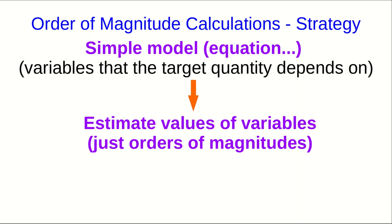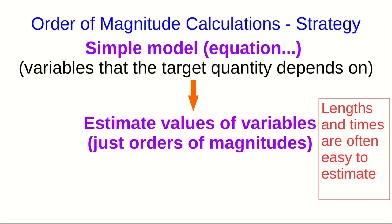Once you know what those variables are, you should try to estimate the values of them, just their orders of magnitudes. But you should have picked a model where it's reasonably easy to estimate these values. Lengths and times are often the easiest things to estimate, so if you can reduce everything to estimating those, that's probably a good choice.